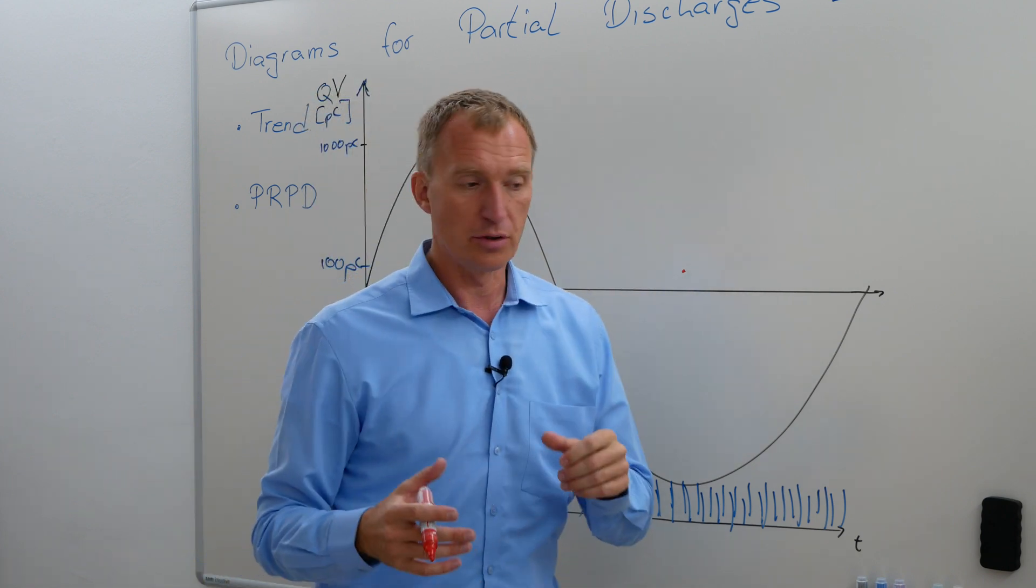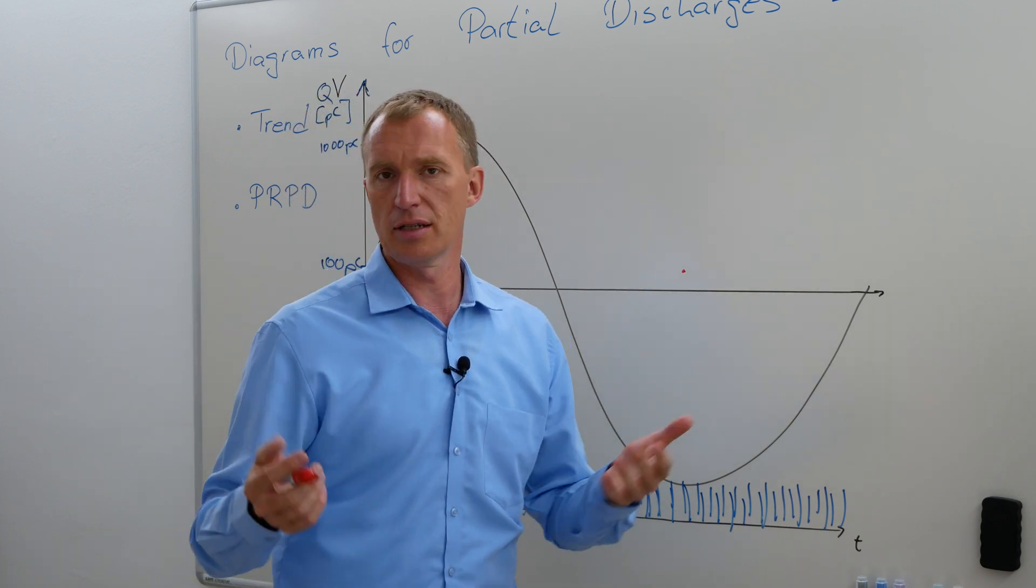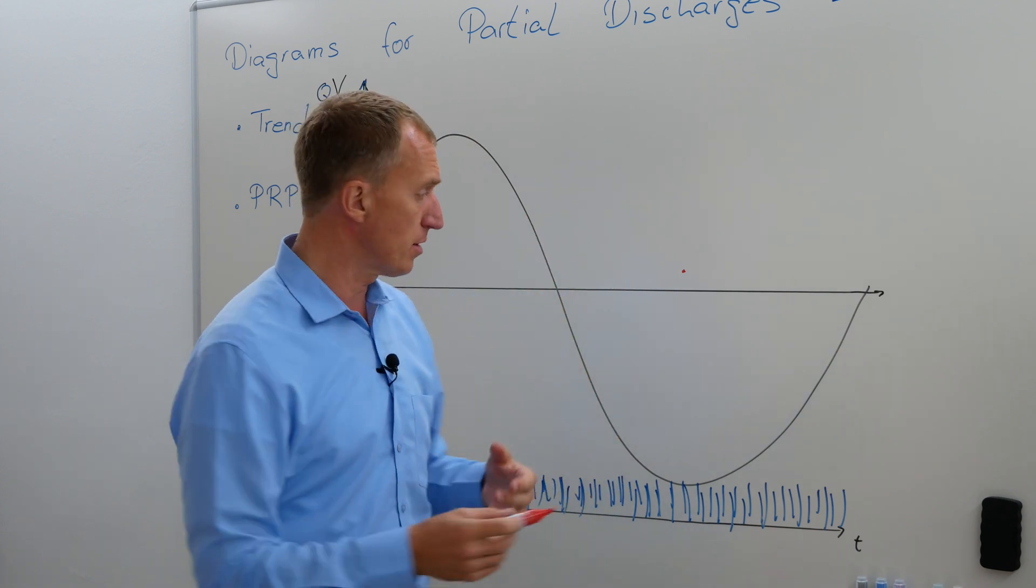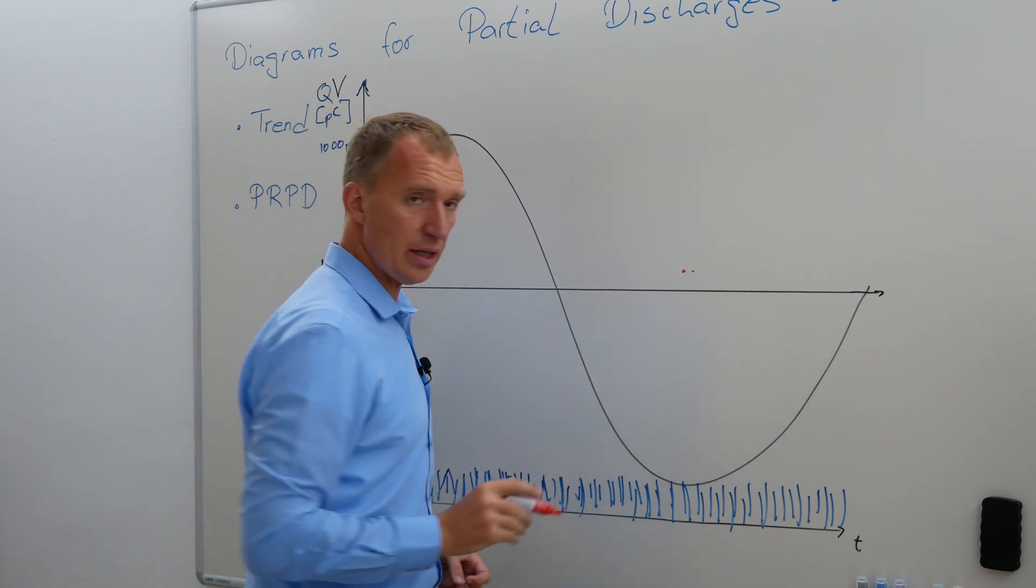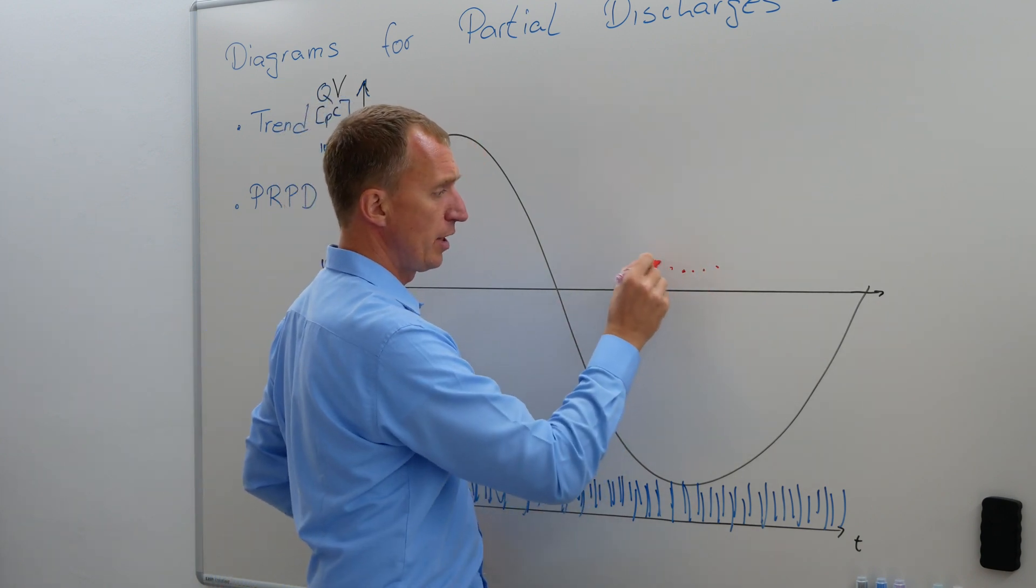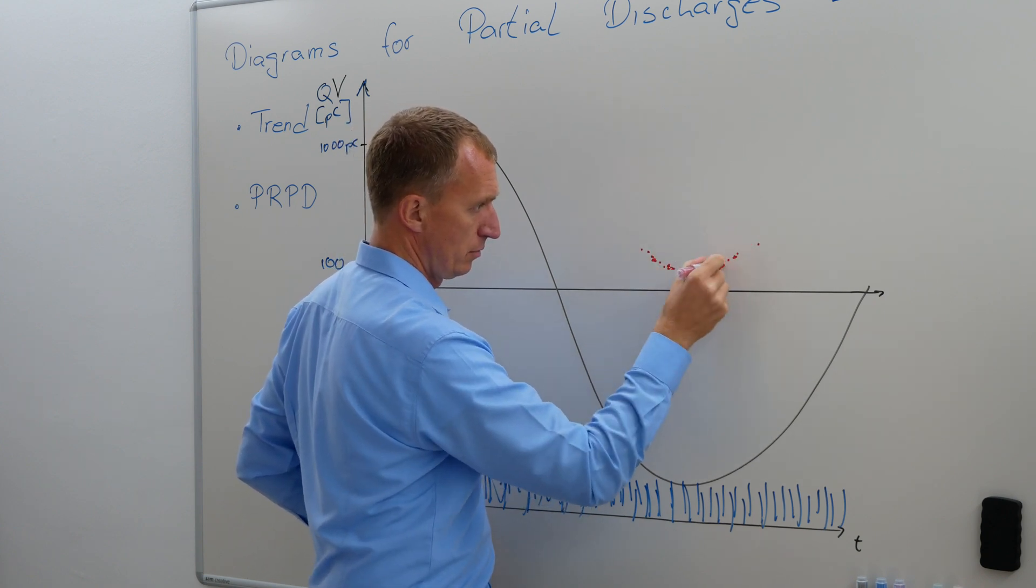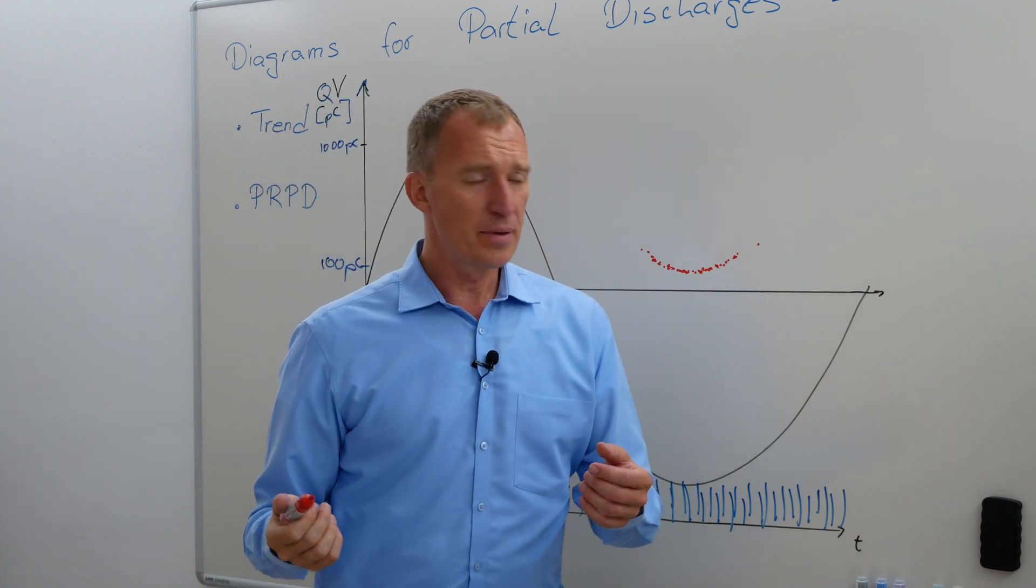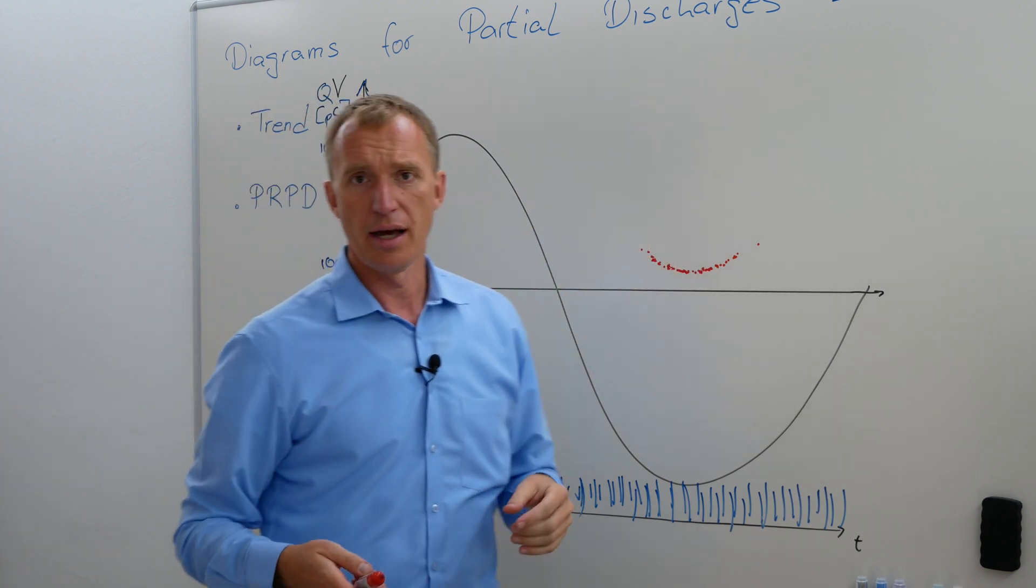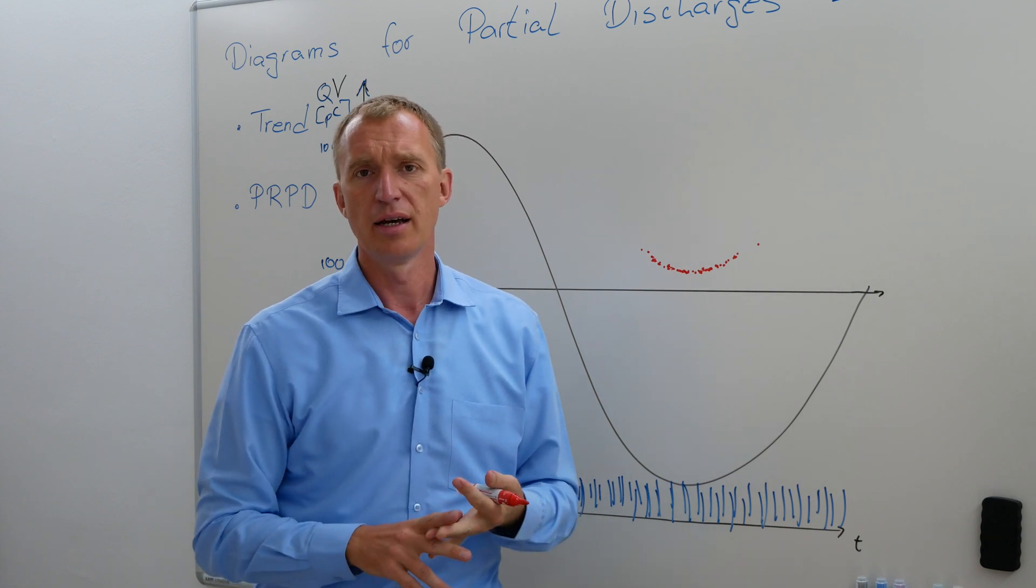Now I'm waiting for the next repetition, for the next voltage repetition, something around 16 or 20 milliseconds later. I'm having another partial discharge, but only one. And this happens here, and the next one is here, and then I have one here, and then here, and here, and here. So what happens is I'm ending up with a lot of dots.